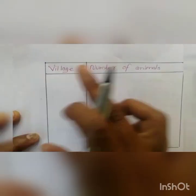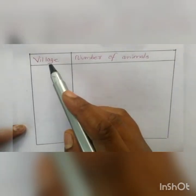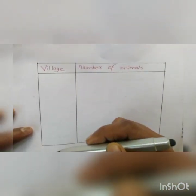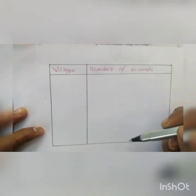For that, first we draw a table with two columns. The first column contains the names of the villages and the second column contains the number of animals. Now consider the question. In the first village there are 80 animals. So in the first column we write the name of the village, Village A, and in the corresponding second column we draw the symbols indicating 80. We know that one symbol represents 10 animals. So how many symbols do we draw? Yes, 8 symbols.